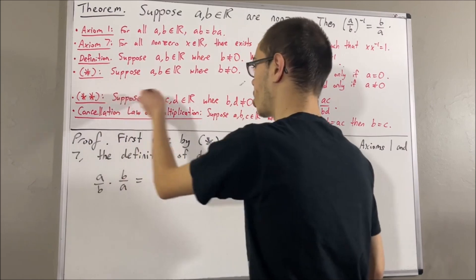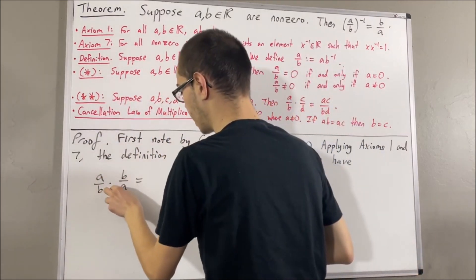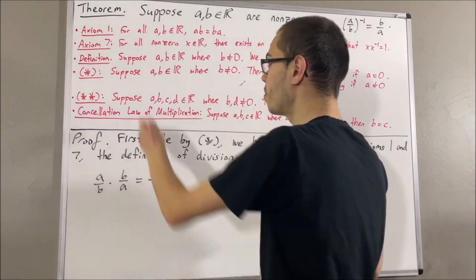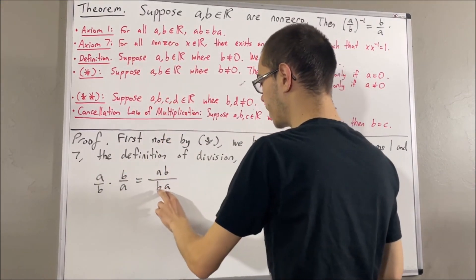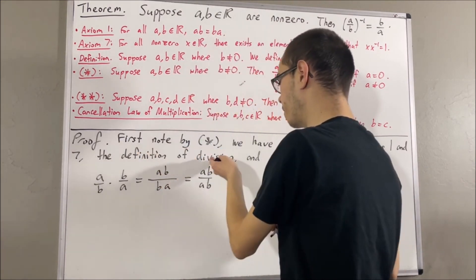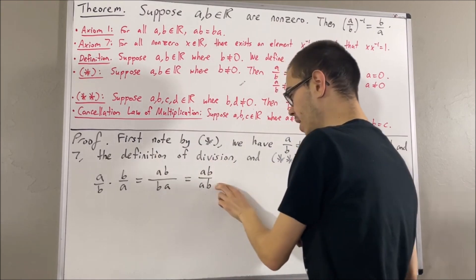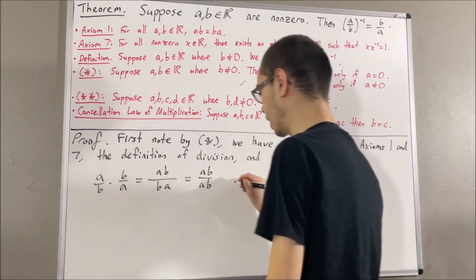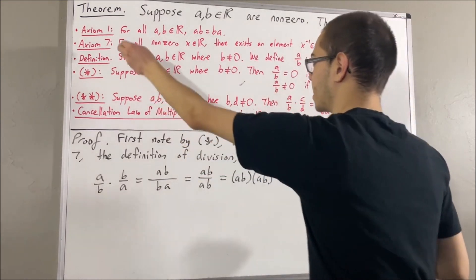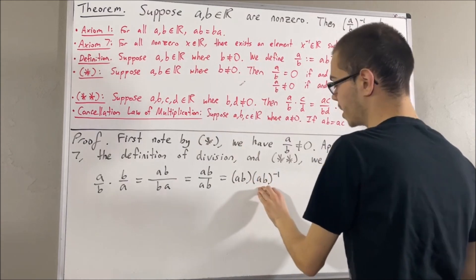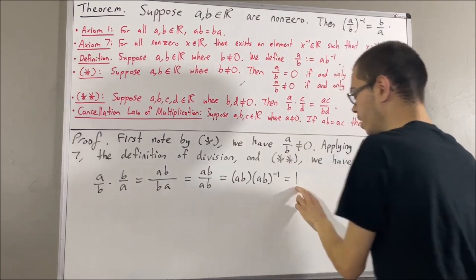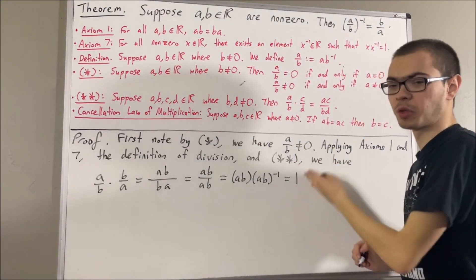First of all, by star star, we have A over B times B over A equals AB over BA. And then, by axiom 1, we can replace the BA in the denominator with AB. And then, by definition of division, AB over AB is equal to AB times the reciprocal of AB. But then, by axiom 7, AB times the reciprocal of AB is equal to 1. But then, by axiom 7 again, we know that 1 is equal to A over B times the reciprocal of A over B.